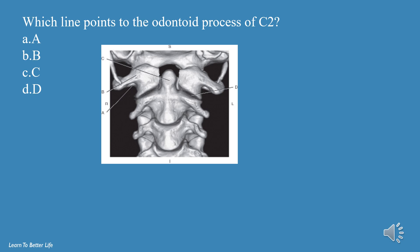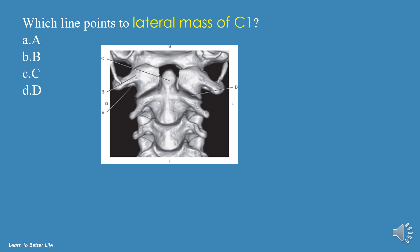Which line points to the odontoid process of C2? A, B, C, or D? The answer is C. Which line points to the lateral mass of C1? A, B, C, or D? The answer is B.